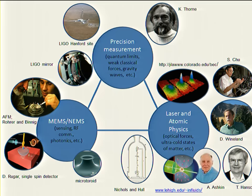Thirdly, on the more application side, you have micro-electromechanical systems and nano-electromechanical systems. People interested in making precision measurements are usually trying to measure something's position. You have the atomic force microscope based on little cantilevers, measurements using cantilevers of single electron spins, and more recently this optical micro-toroid — a resonator in which light whispers around the periphery of a glass toroid. This is one of the first structures where people measured radiation pressure effects.